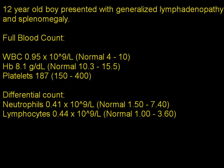A 12-year-old boy presented with generalized lymphadenopathy and splenomegaly, concurrent with some weight loss and sweating at night. A full blood count was done which showed that his white cell count was very low.